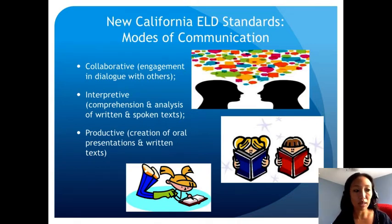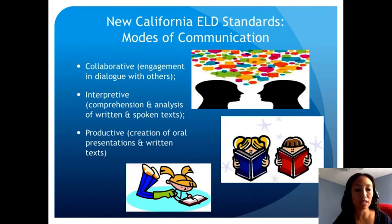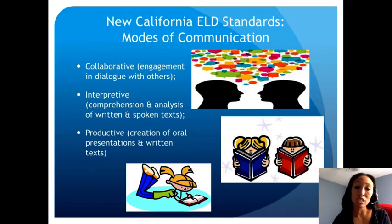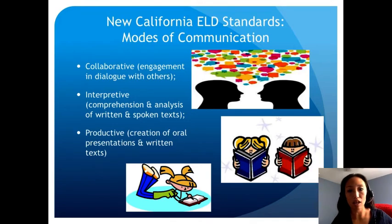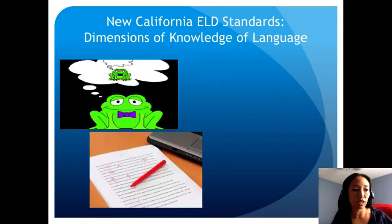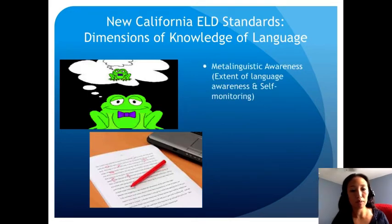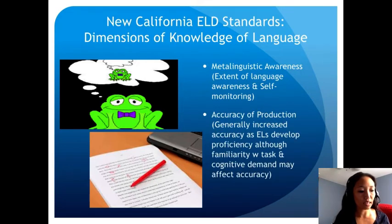Interpretive includes listening and asking or answering questions, reading closely and explaining, evaluating how other writers or speakers use language, and analyzing choices in writing. Productive expression involves oral presentations and writing of both literary and informational text, supporting opinions and validating arguments, and selecting and applying varied and precise vocabulary. The ELD standards also include dimensions of knowledge and learning, including meta-linguistic awareness — the extent of language awareness and self-monitoring — and accuracy of production.